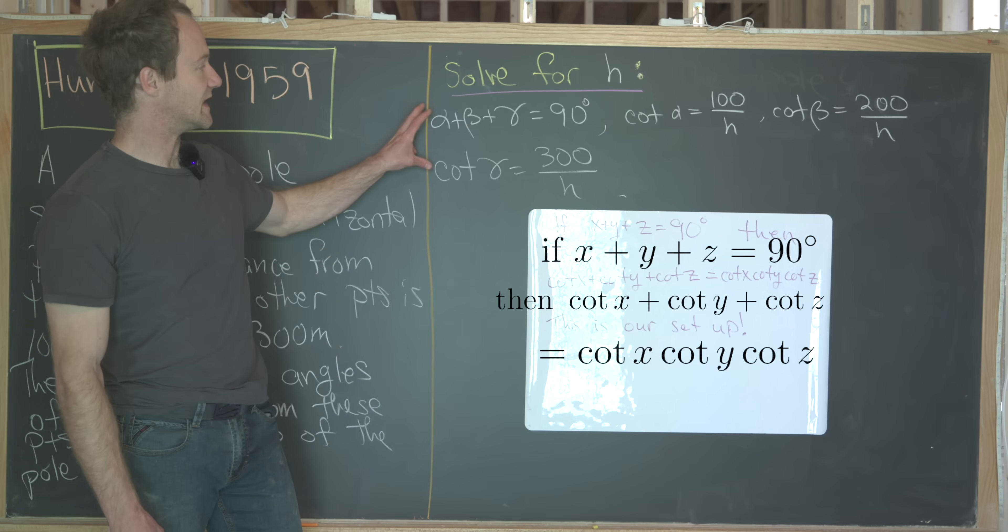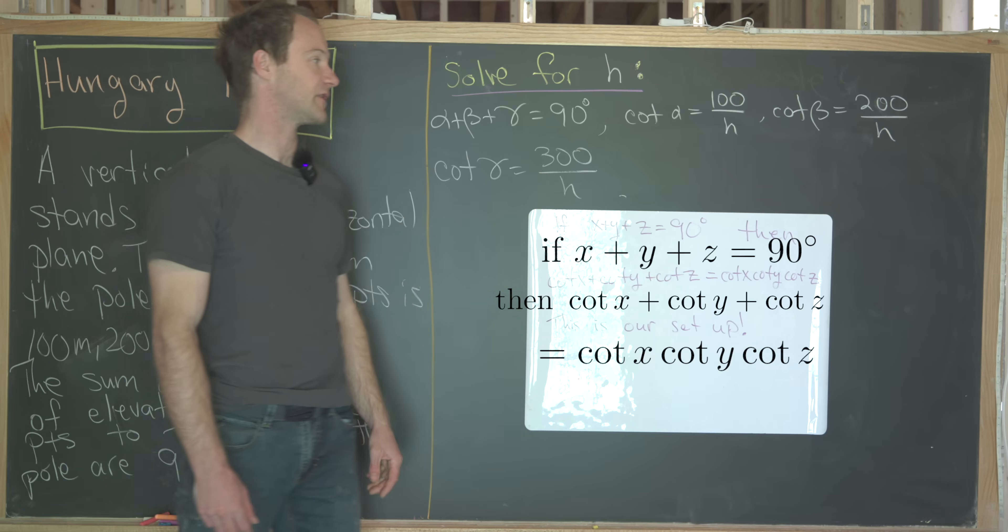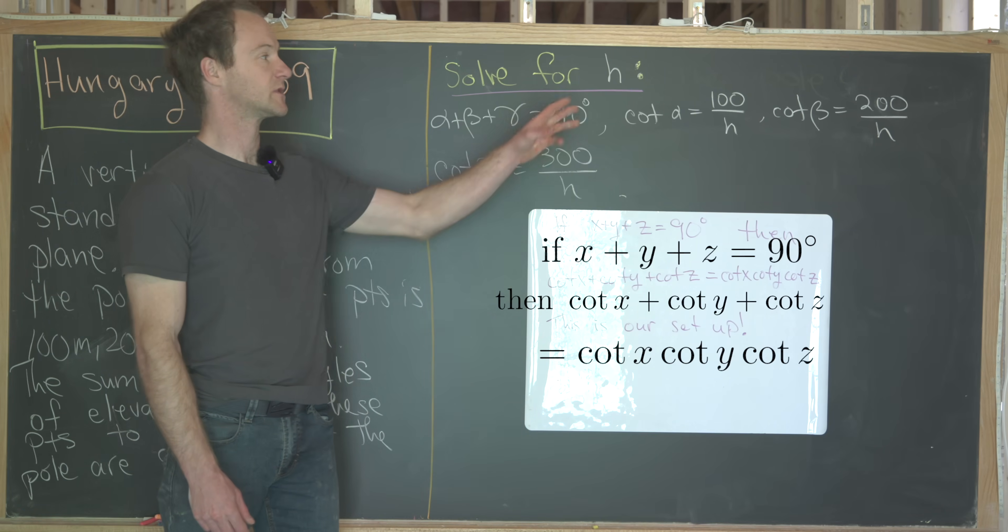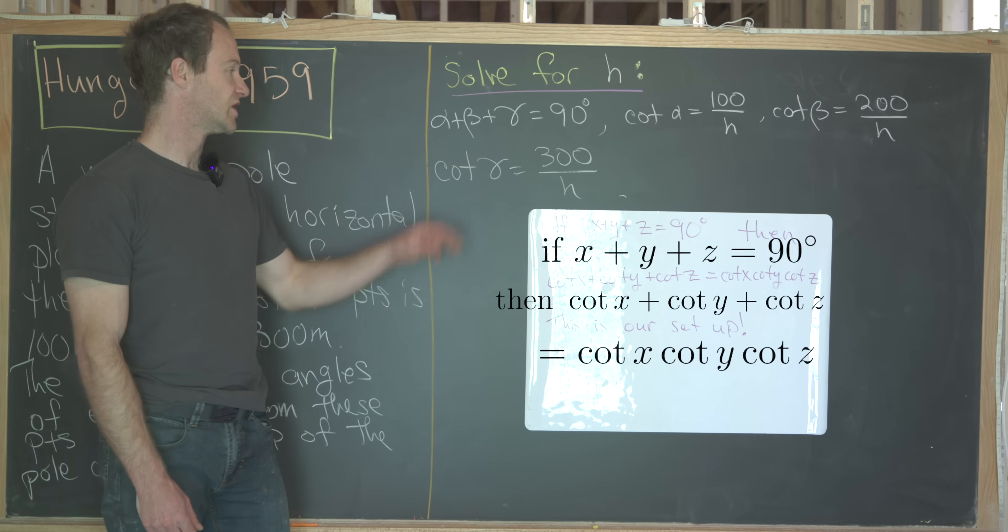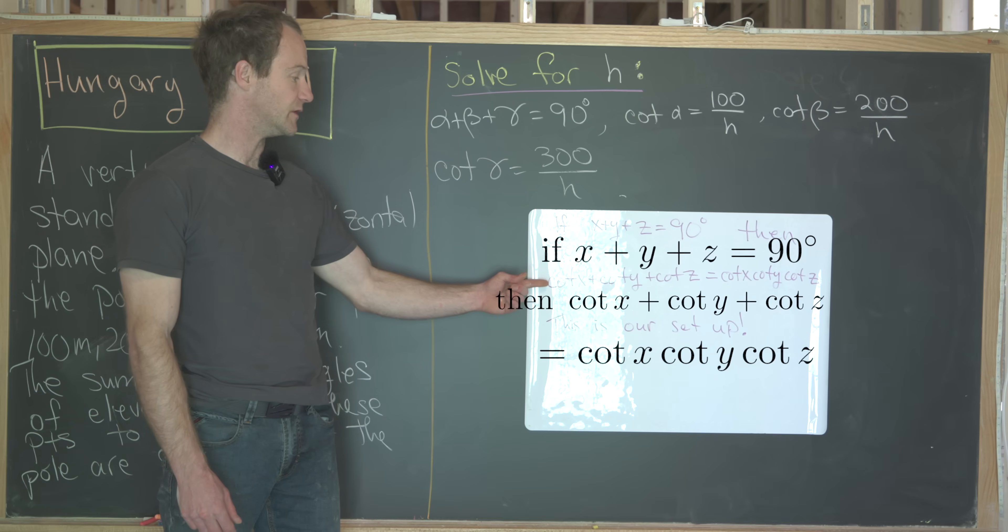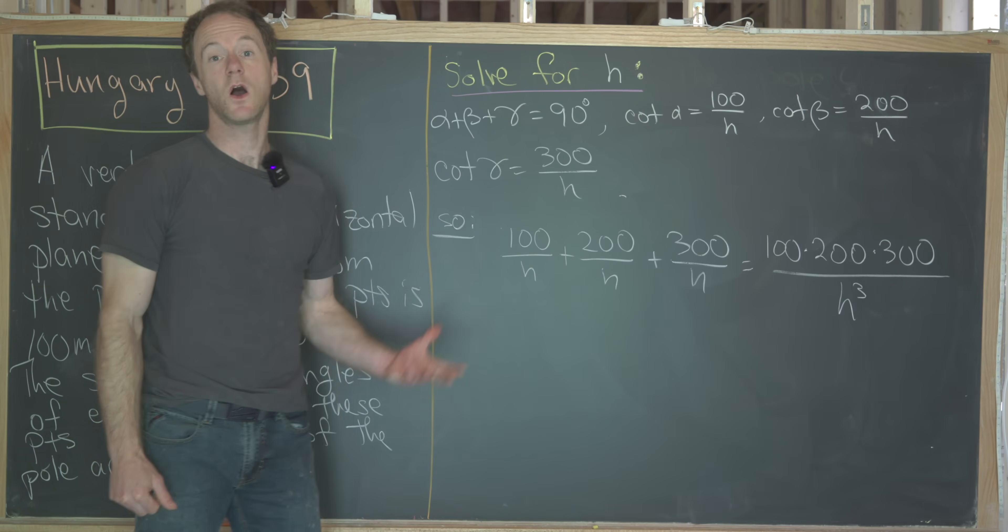So now let's go ahead and insert these objects. Cotangent of alpha equals 100 over h, cotangent of beta is 200 over h, and cotangent of gamma equals 300 over h into this equation where x is alpha, y is beta, and z is gamma. So let's see what we get.